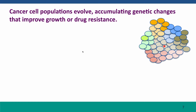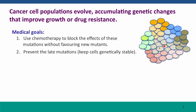This means that cancer cell populations — the descendants of the initiating cell — evolve and accumulate genetic changes that can, in particular, improve their growth or drug resistance. Natural selection eliminates any cells that have mutations that make them grow more poorly, but it favors mutations that increase cell growth or make the cells resistant to any drugs the patient might be treated with. Medical goals are to use chemotherapy to block the effects of these mutations, block the growth-promoting behaviors, and at the same time prevent more mutations from occurring, in the hope of keeping the cells genetically stable so that they can be killed by chemotherapeutic drugs.